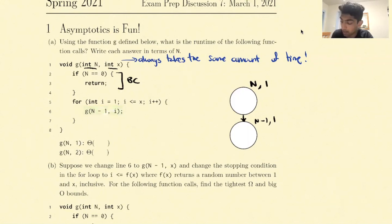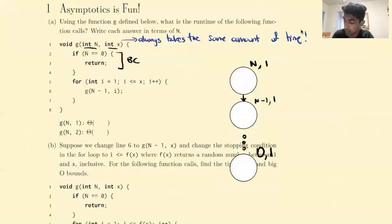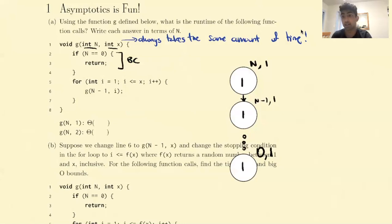The next time we call the function, the input size will be n minus 1, and the value of x will be 1. Notice that when we have x equal to 1, we only ever have one recursive call. So we get this linear tree structure. The inside of each node I like to think about as the work for that recursive call — every time we call g, we can think about g as doing constant work.